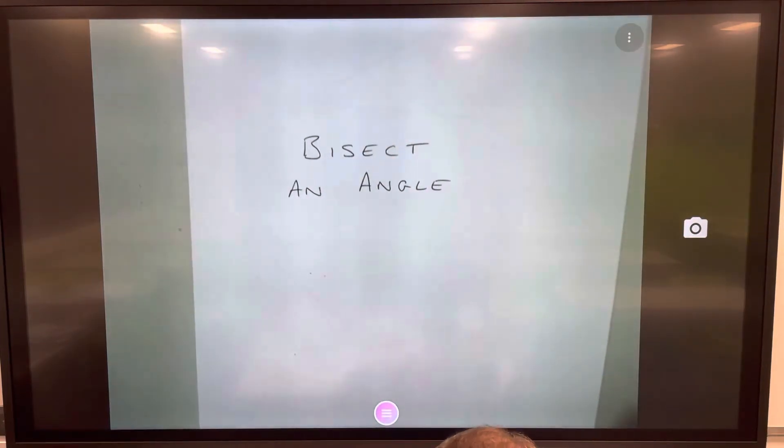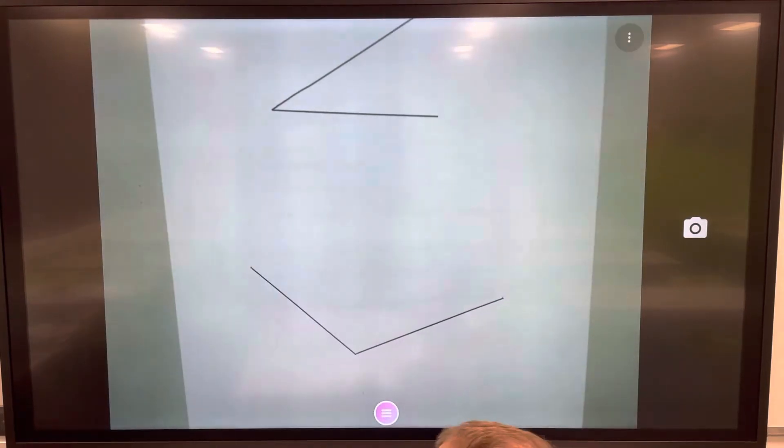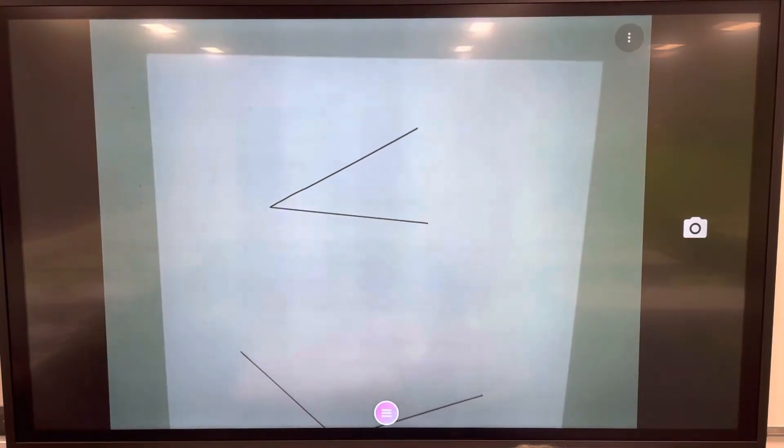We need to bisect an angle, so here's my angle. I've got an acute angle first, less than 90 degrees. I'm going to bisect it, so to bisect means to chop in half.